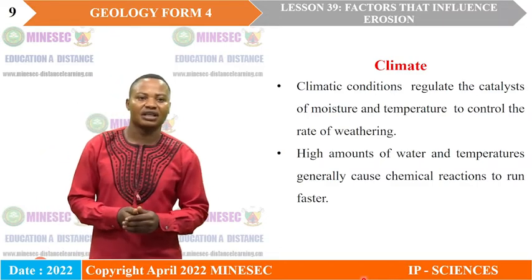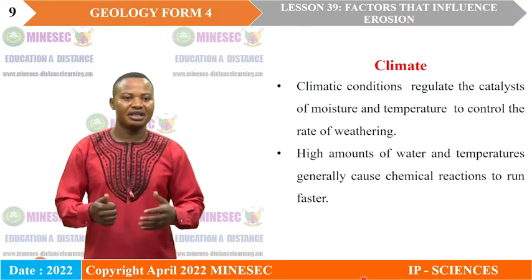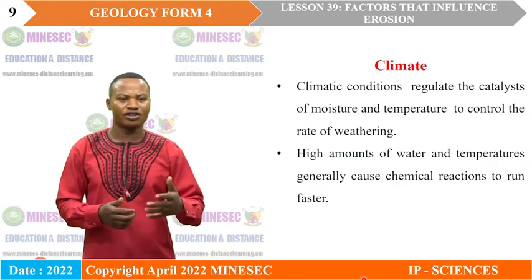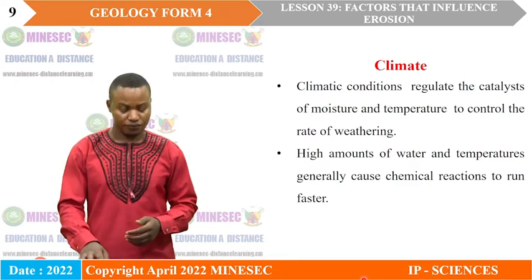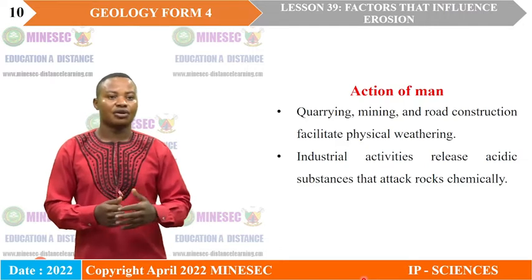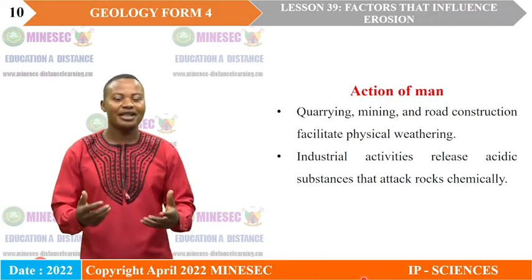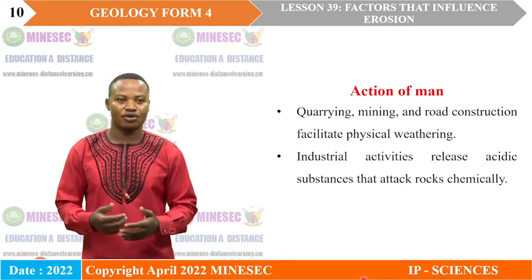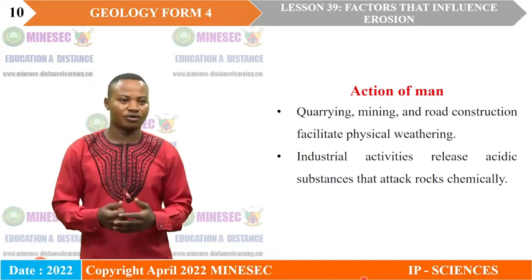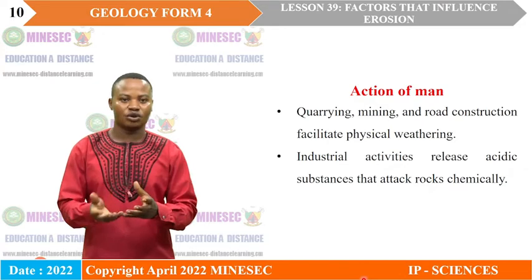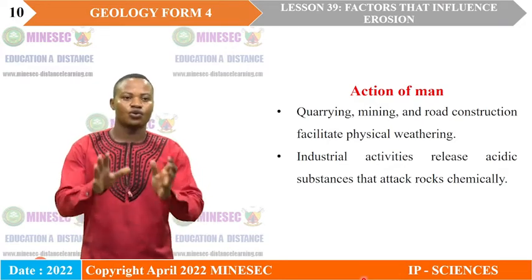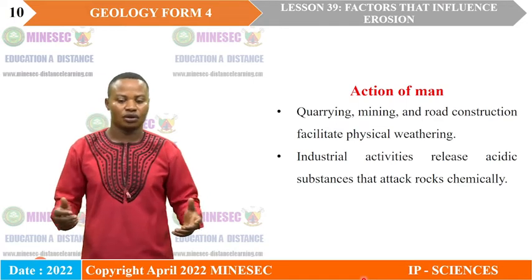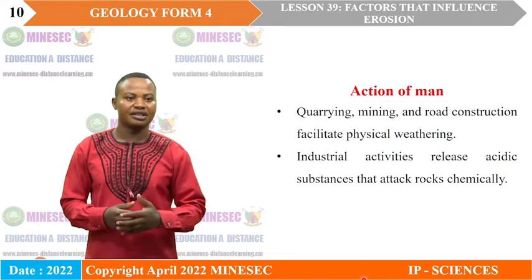Climate: climatic conditions regulate or act as catalysts to increase the rate of reaction, thereby increasing the rate of weathering. Key climatic elements include high amounts of water from precipitation and temperature. The action of man — such as quarrying of rocks, mining of minerals, road construction, construction of houses, airports, and seaports — facilitates physical weathering. Industrial activities equally release acidic substances that attack rocks and increase chemical weathering.